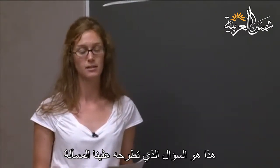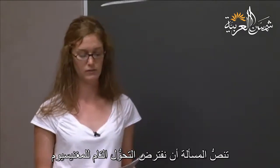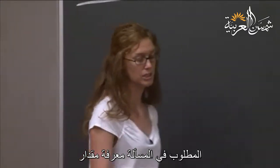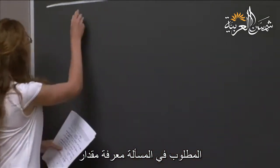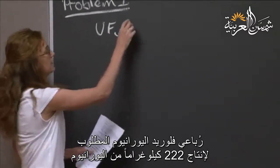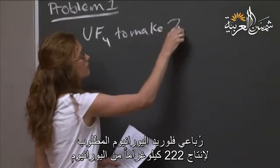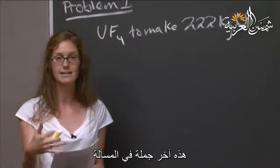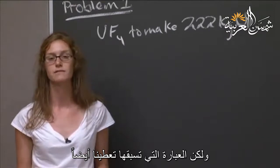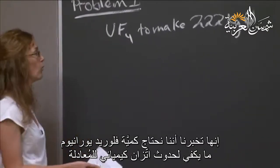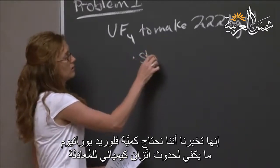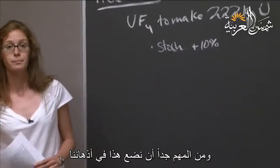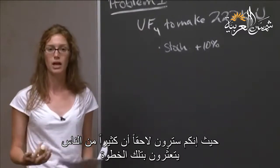The question asks for the uranium tetrafluoride needed to make 222 kilograms of uranium. Assume complete conversion of magnesium, and express your answer in kilograms. The sentence before that also gives us very important information: we need the stoichiometric equivalent plus 10%. That's where a lot of people got tripped up on this problem.